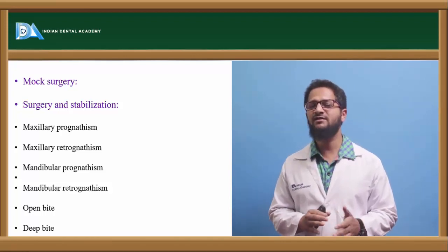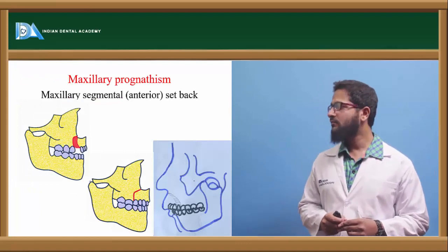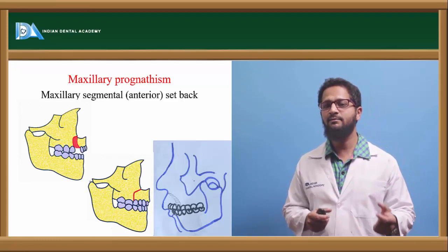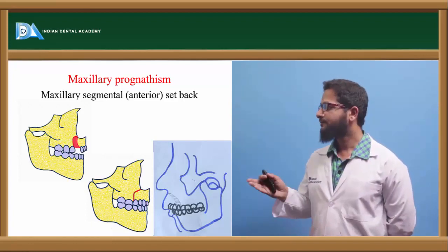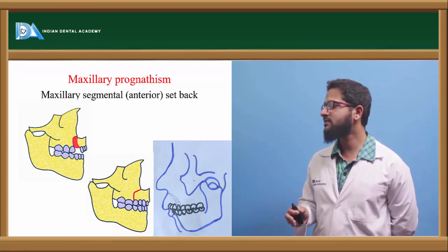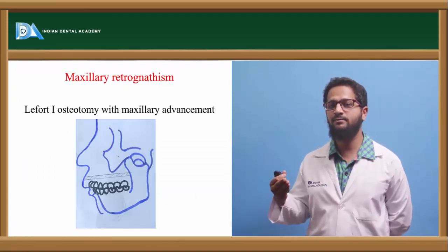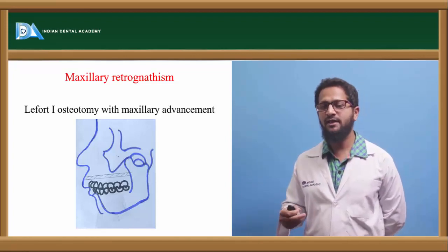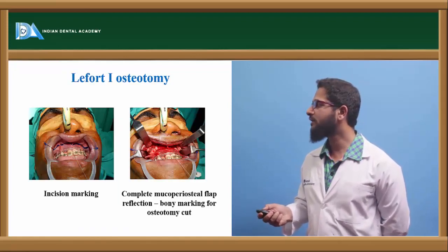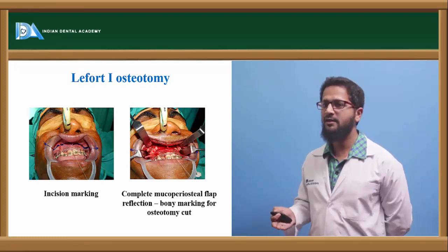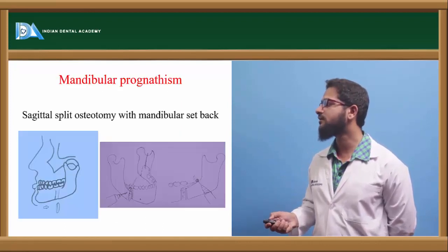Next, surgery and stabilization — a brief overview of surgeries for various malocclusions. In case of maxillary prognathism, a maxillary segmental anterior setback can be done, where the maxilla is positioned correctly and splinted. In maxillary retrognathism, where the maxilla is positioned backwards, a Le Fort I osteotomy is done — a complete mucoperiosteal flap is reflected, cuts are made, the maxilla is repositioned and advanced to the correct position, and fixation with mini-plates and screws is done.